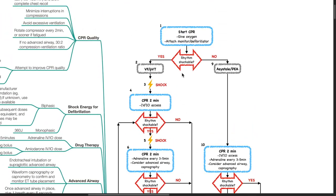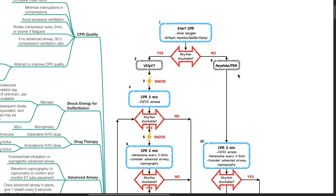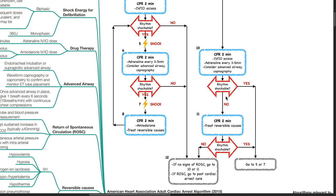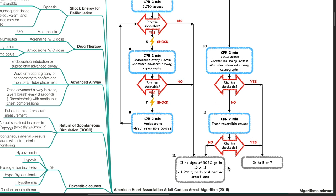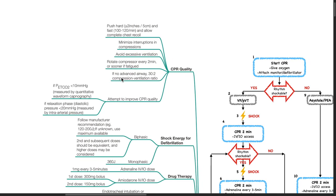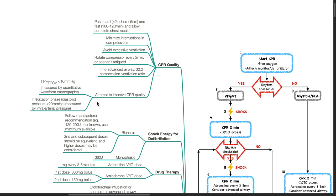If the rhythm is not shockable such as asystole or PEA, provide CPR for 2 minutes, obtain IV or IO access, give adrenaline every 3 to 5 minutes, and consider advanced airway and capnography. After 2 minutes, assess if shockable — if so, go to steps 5 or 7; if not, provide CPR for 2 minutes and treat reversible causes. Ensure high CPR quality: push hard more than 5 cm deep at 100 to 120 per minute, allow complete chest recoil, minimize interruptions, avoid excessive ventilation, rotate compressor every 2 minutes, use 30:2 ratio without advanced airway, and aim for ETCO2 above 10 mmHg and diastolic relaxation pressure above 20 mmHg.